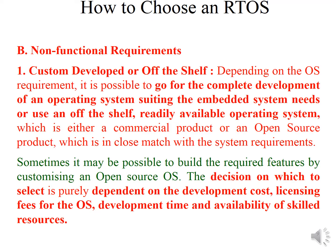Open source means free of cost; commercial means paid. The decision on which to select depends on certain factors. If you are planning to develop an operating system yourself, you need to consider the development cost, the development time, and the availability of skilled resources — skilled laborers or employees required to develop the OS.